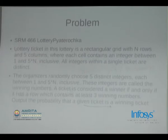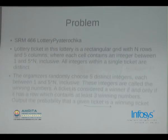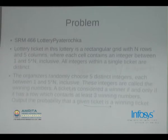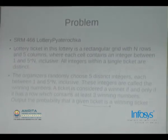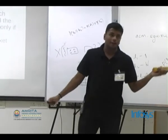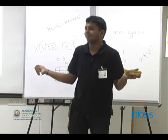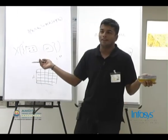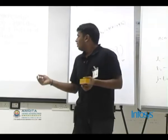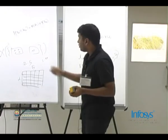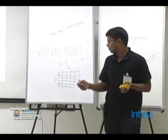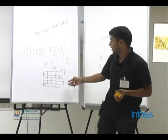Now let's look at a problem from TopCoder SRM 466. The problem states: you have a rectangular lottery which is an N×5 grid, with numbers from 1 to 5N written so that each number occurs exactly once. I'll give you some time to read the statement. The problem asks: a lottery is defined as an N×5 grid where every element is distinct — each element from 1 to 5N occurs once in this lottery.